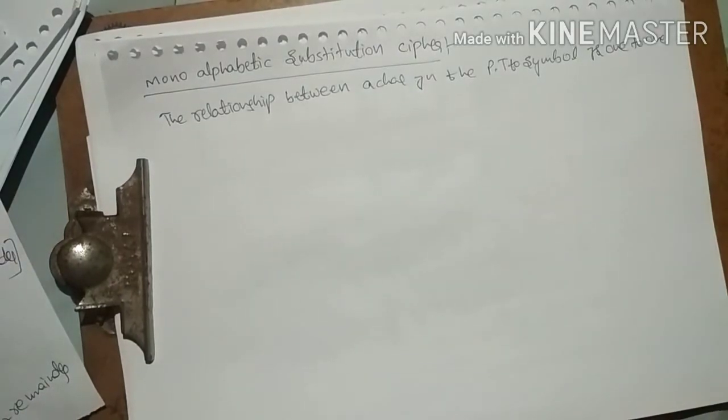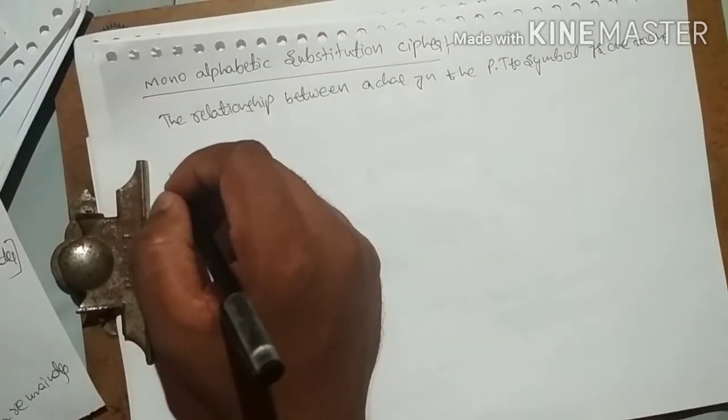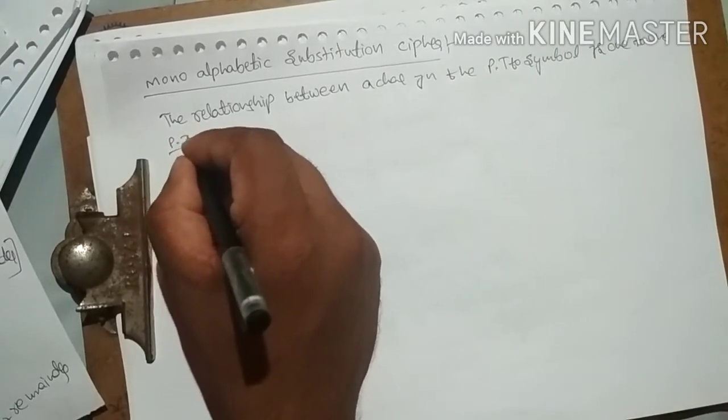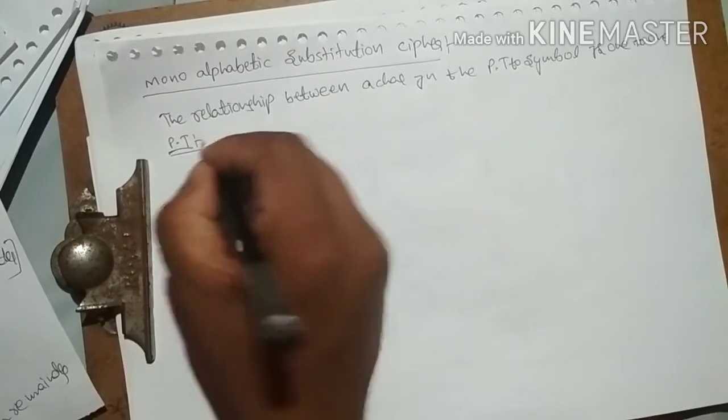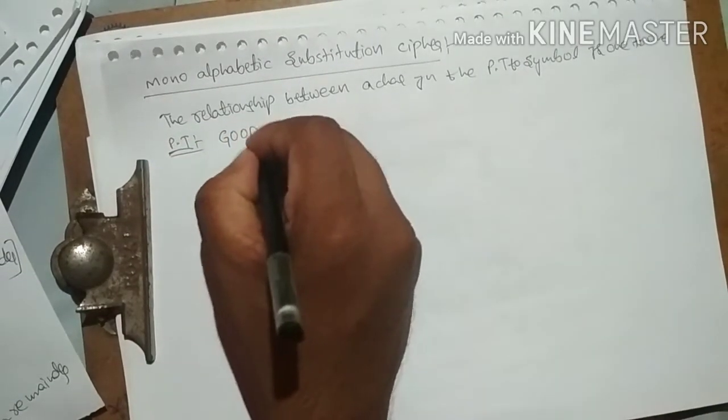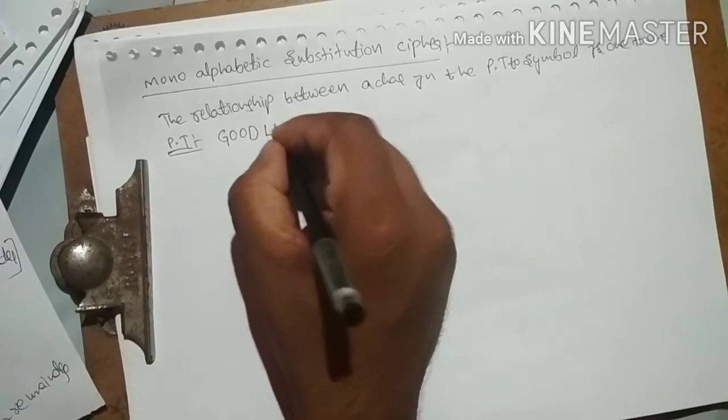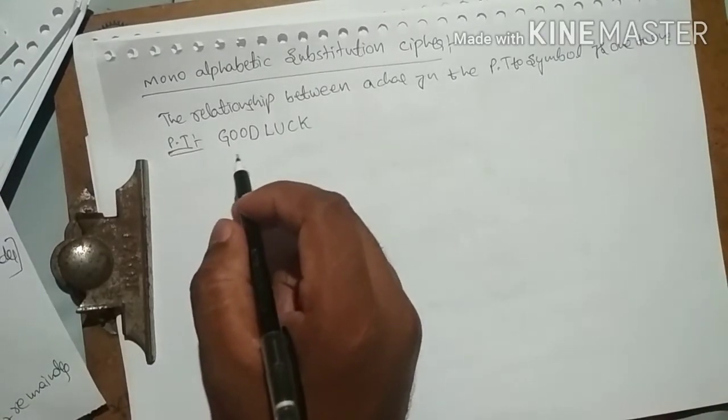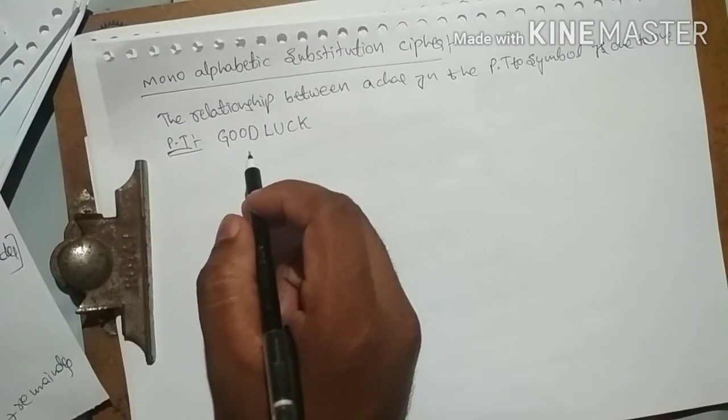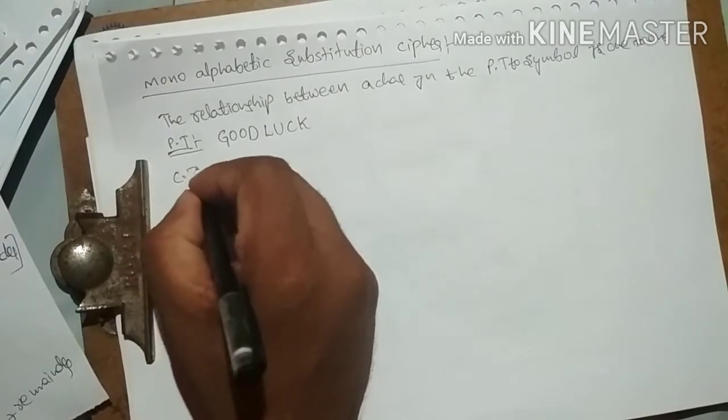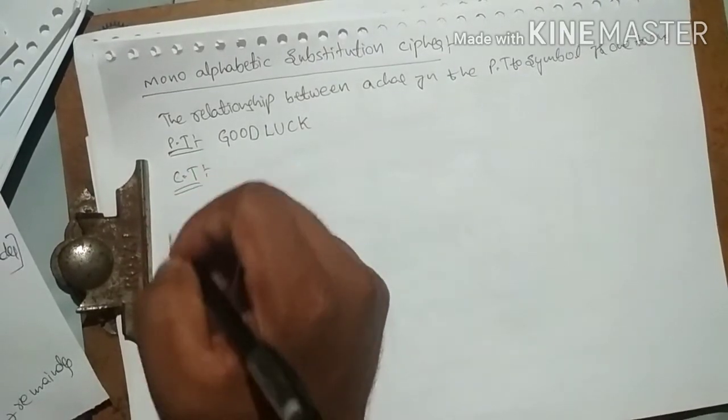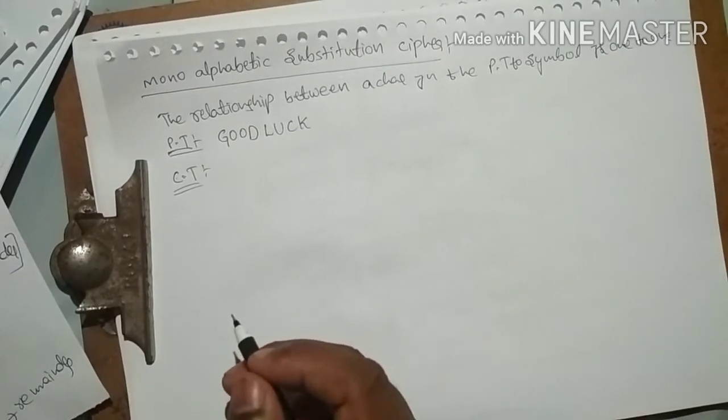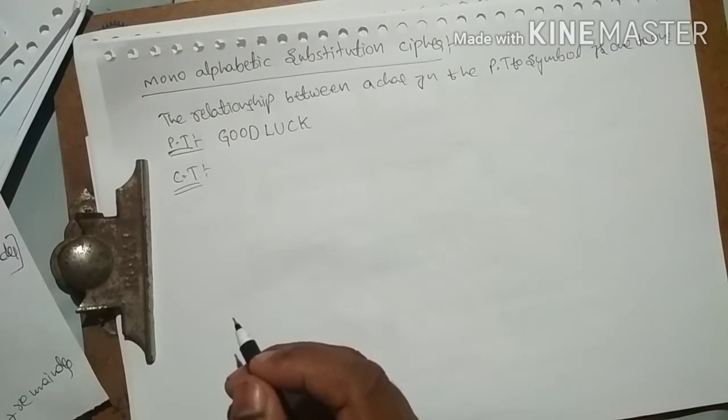That means let's take plaintext: good luck. So we have to get a cipher text. It's a very simple technique. Just we have to assign the values for the alphabets.